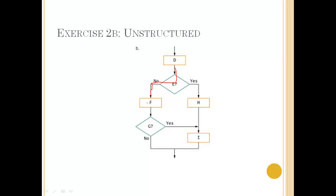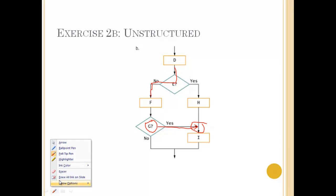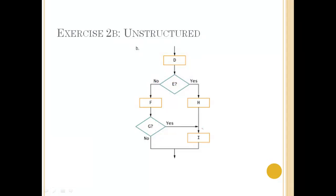Process F does whatever it does, and it looks like it's modifying some sort of sentinel value for decision G. If decision G evaluates to yes, it wants to go to process I and do process I. The problem is this violates that single entry point — notice this would be two arrows, meaning two entry points. We don't want that.